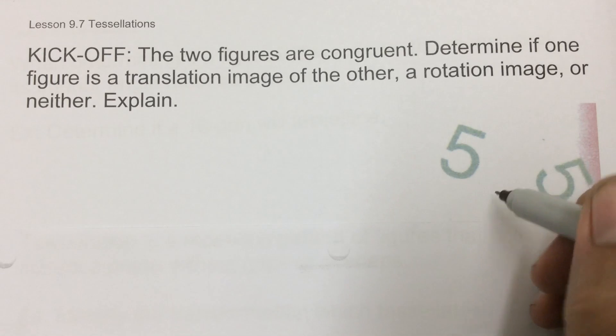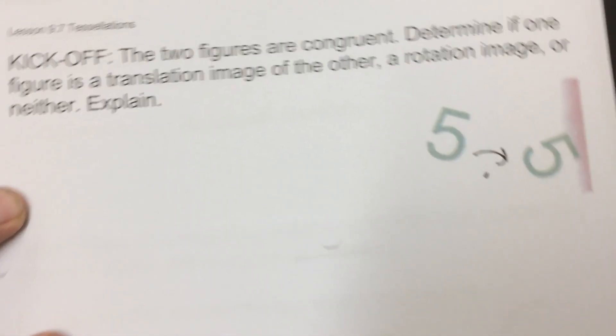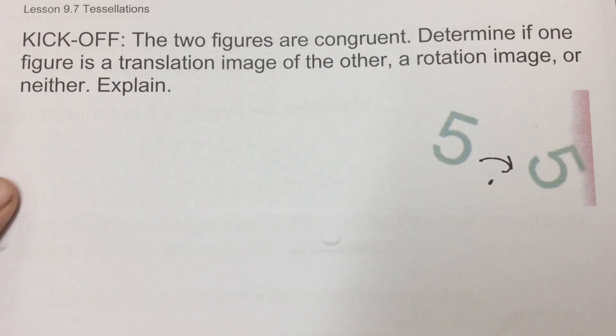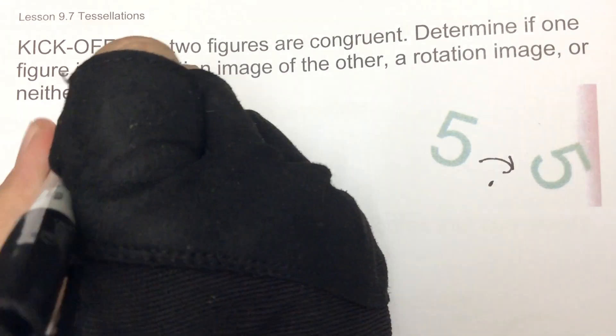Well, again, if we take this, it looks like we could have had a dot here and we would have taken it and just rotated it right around. So we're there, and then we're moving it, and boom, there's our five. So this one would be a rotational image.